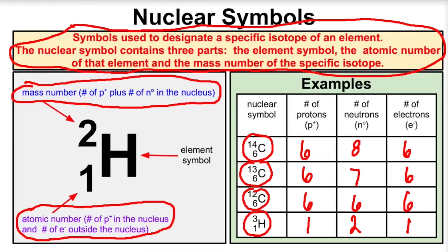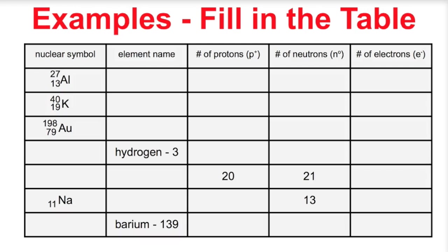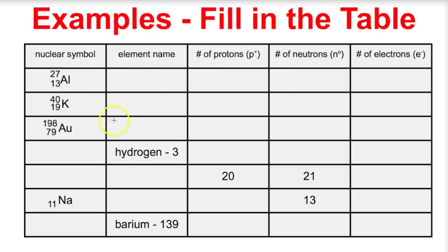Let's take a look at a few more examples. At this point I recommend that you pause the video and try to work on these yourself. Try to figure out the number of protons, the number of neutrons, the number of electrons, the element name, and the nuclear symbol for each one of these given the information in each row.